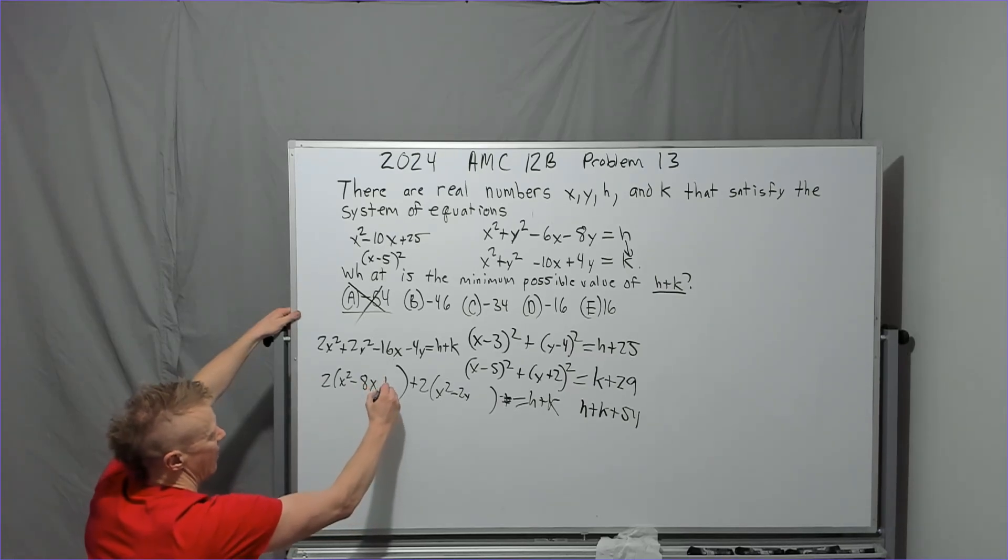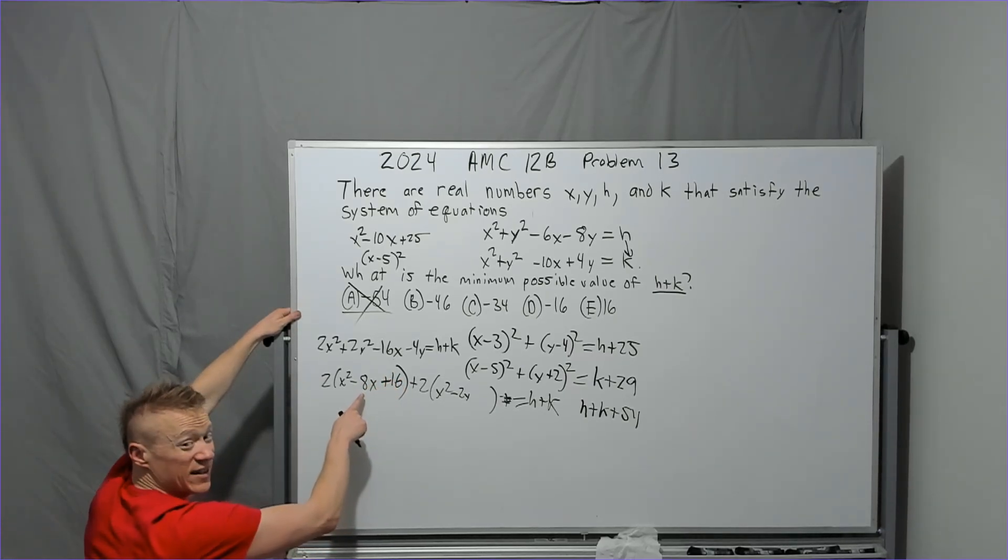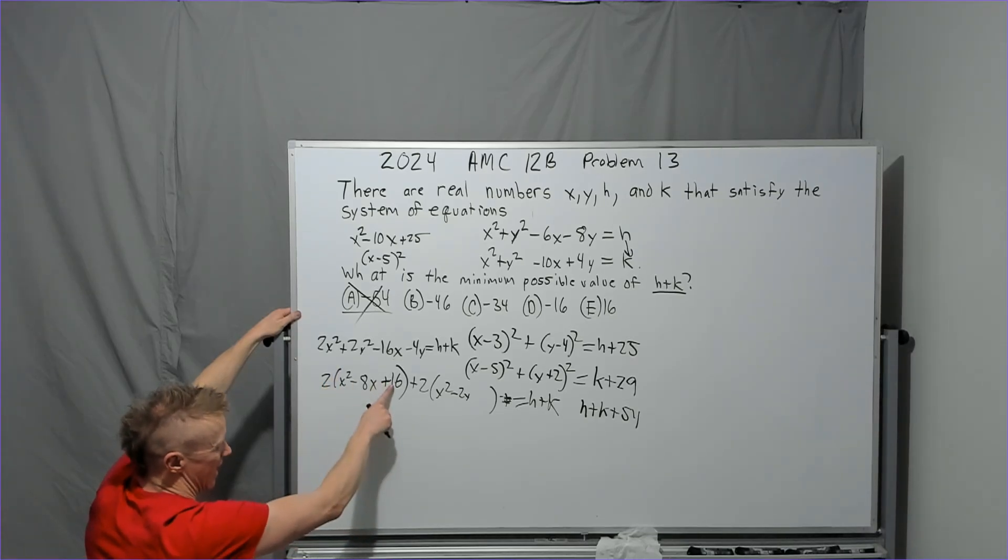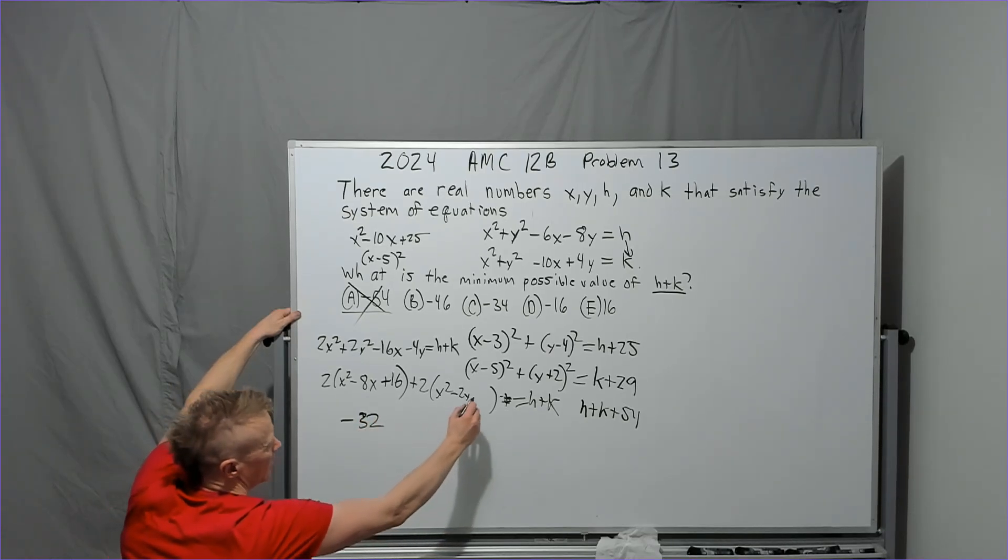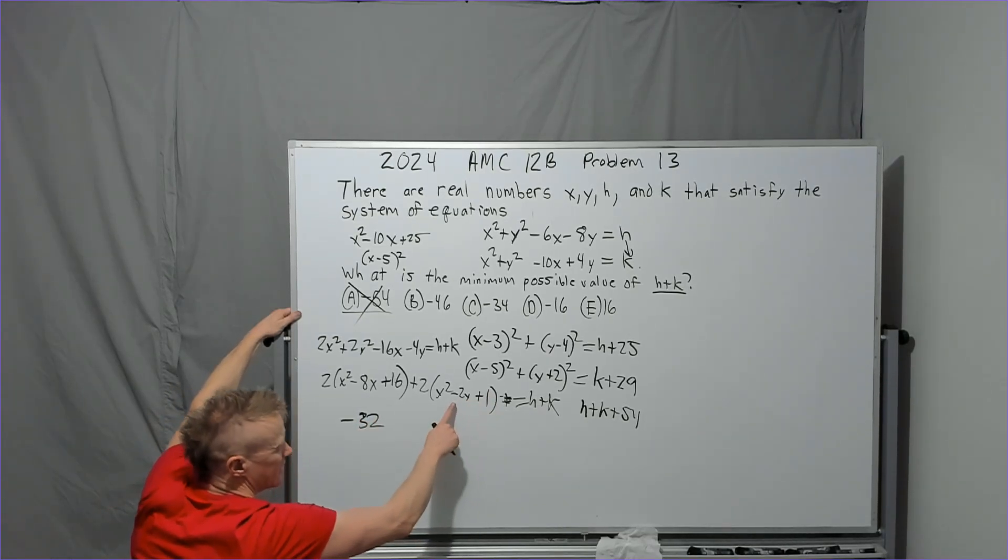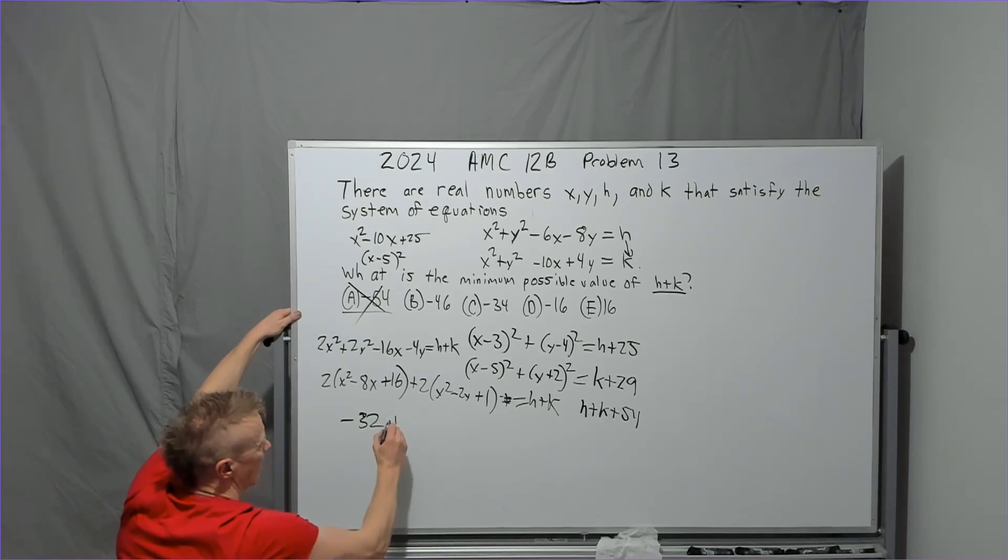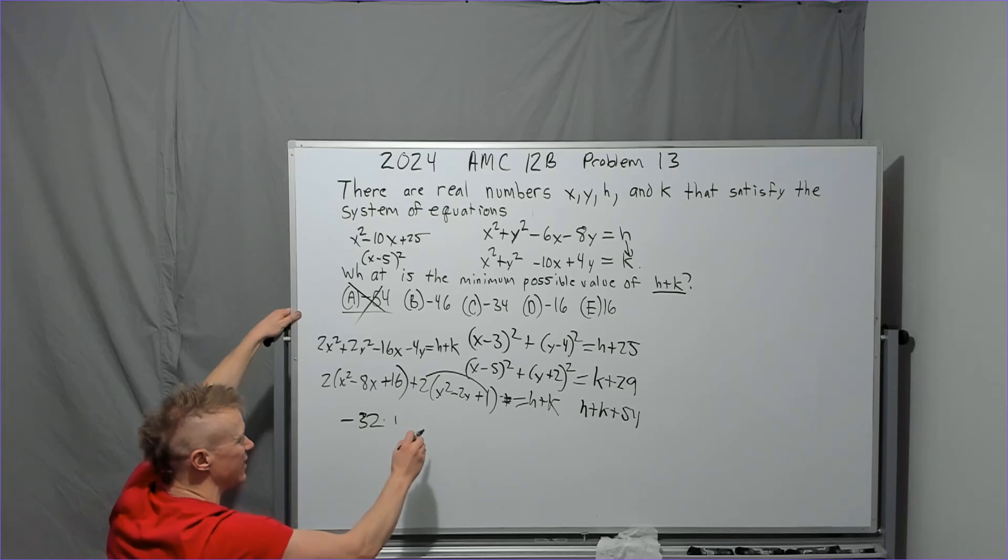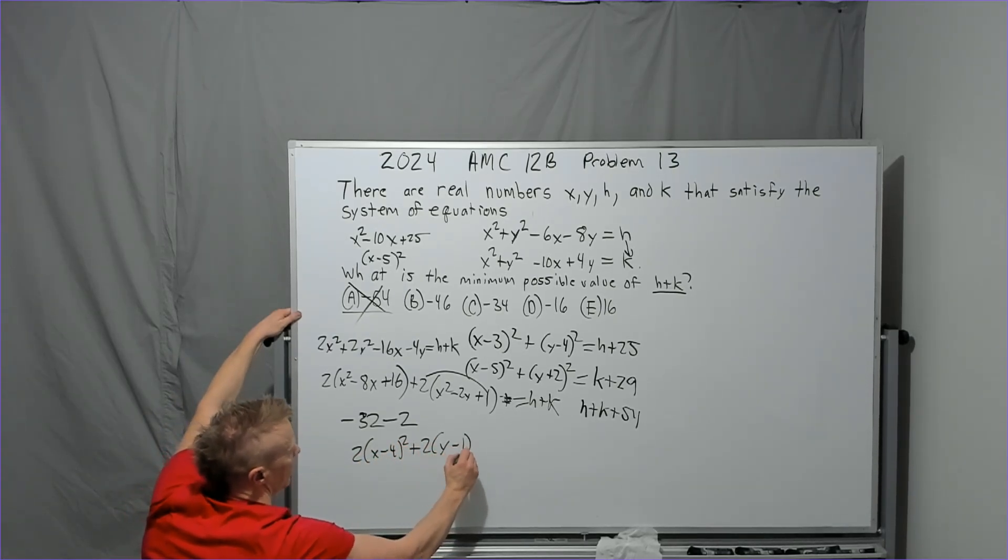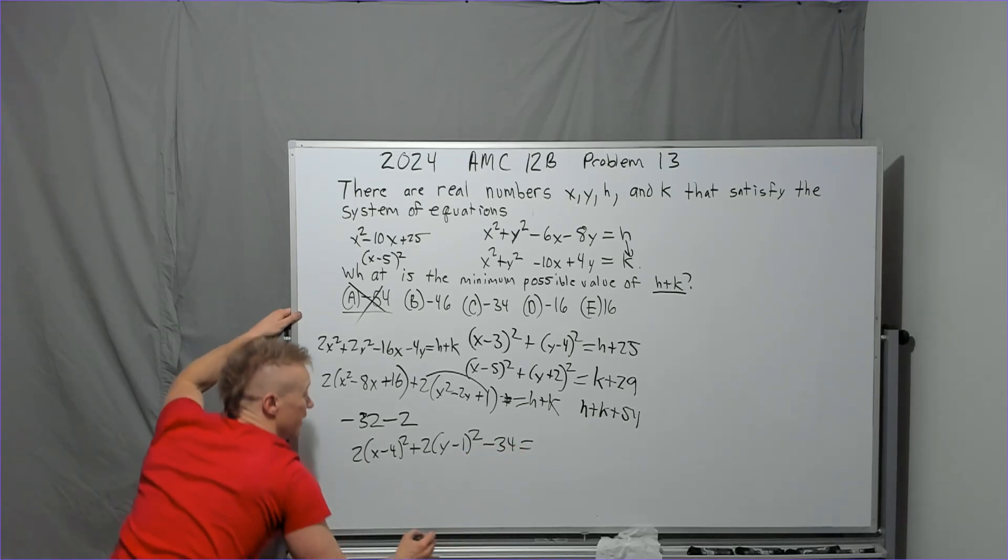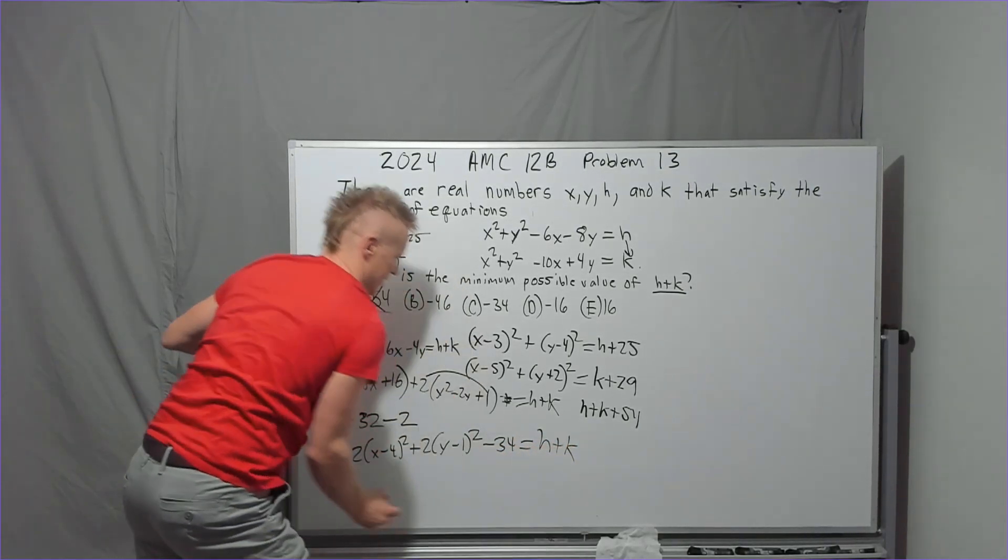So now what? I'm going to have to complete the square here. You're cutting the negative 8 in half. You're adding 16, because that's the square of the negative 4. Then you have, you actually added 32. So you have to put a minus 32. Over here, you're adding 1, because negative 1 cut in half squared is 1. And now you have to add 2. You added 2 to do that. You're just putting that 1 in there. It didn't exist. So you're going to have to compensate by subtracting 2. And so now what it will say is 2 times x minus 4 squared plus 2 times y minus 1 squared minus 34 needs to equal h plus k.